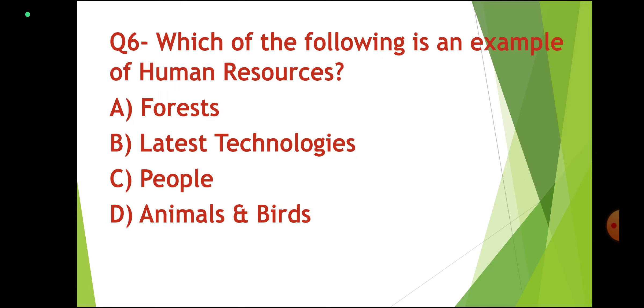Question number 6: Which of the following is an example of Human resource? Options: Forest; Latest technologies; People; Animals and Birds. Correct answer: People.